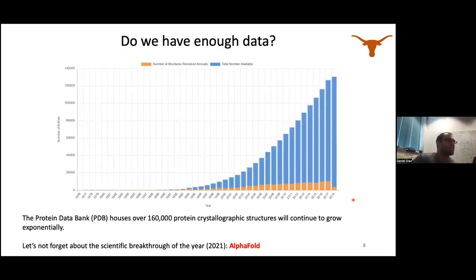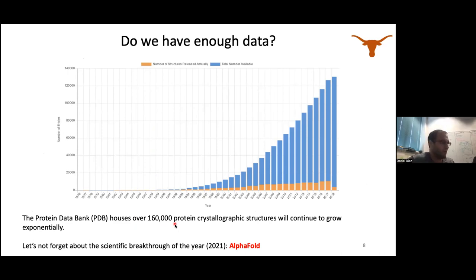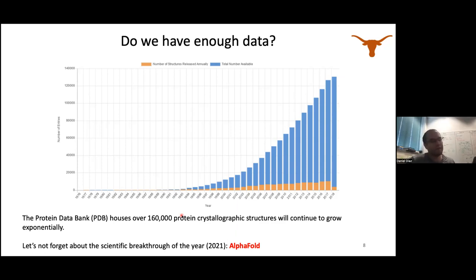Our dataset usually consists of the protein databank. When I made this slide it had 160,000 protein structures; I checked yesterday and we broke 190,000, so the database is expanding really fast. Even more importantly, the scientific breakthrough of last year was AlphaFold, which enables us to fold proteins computationally and drastically expand our dataset for structure-based deep learning.